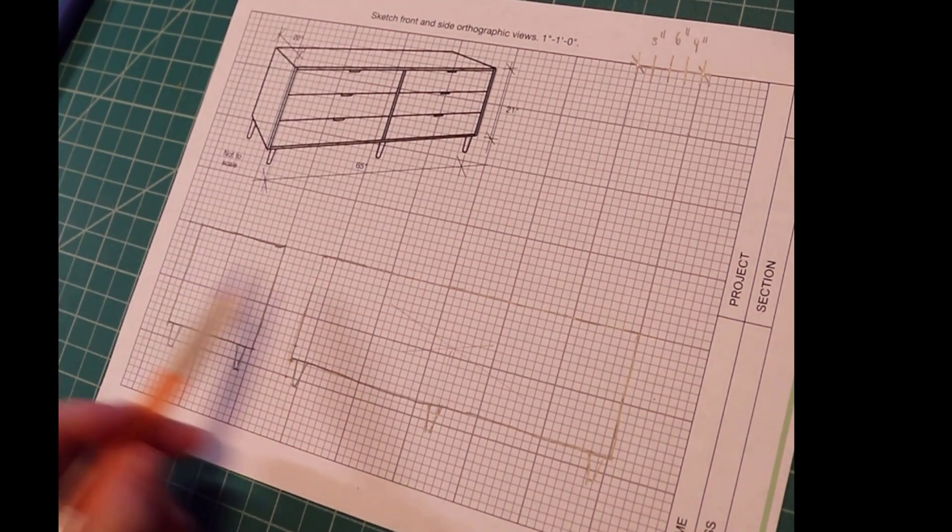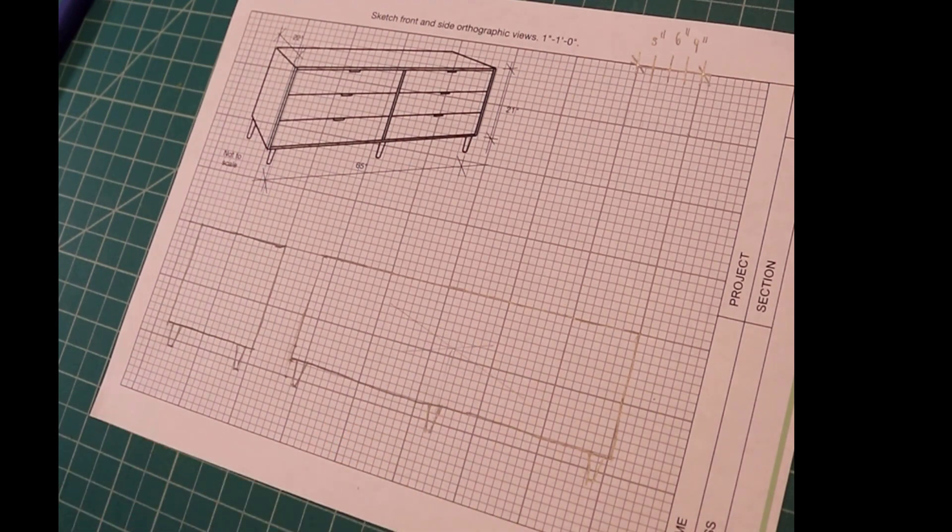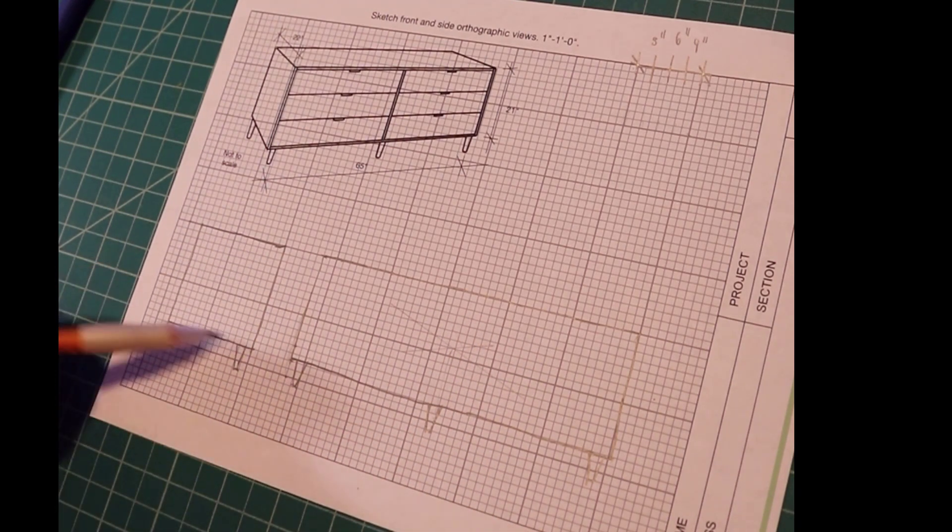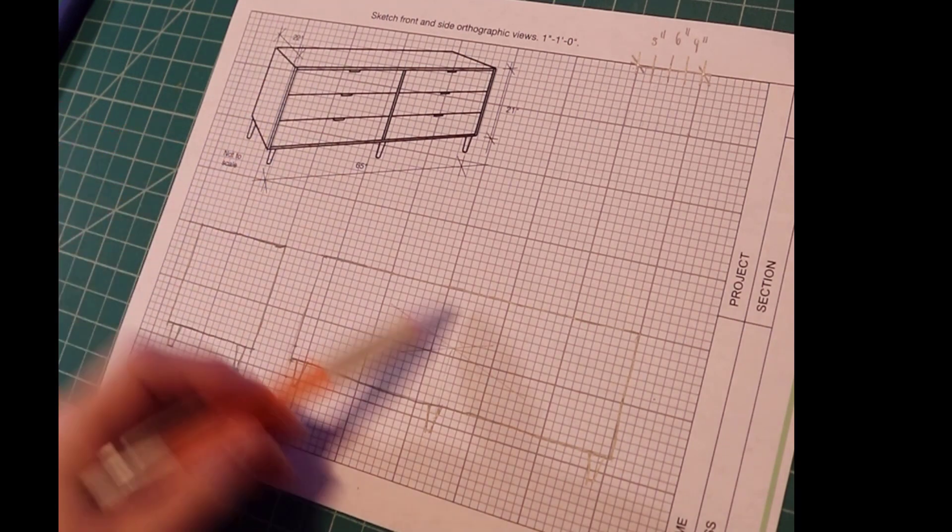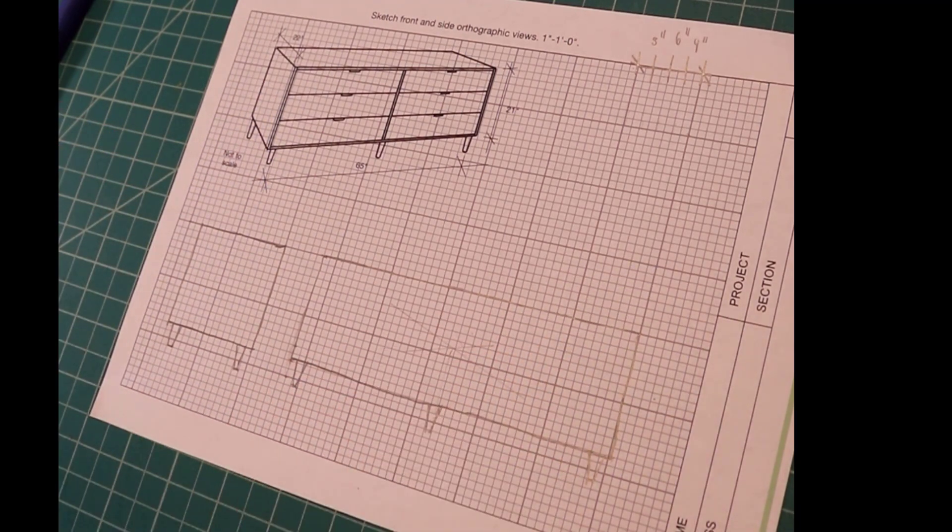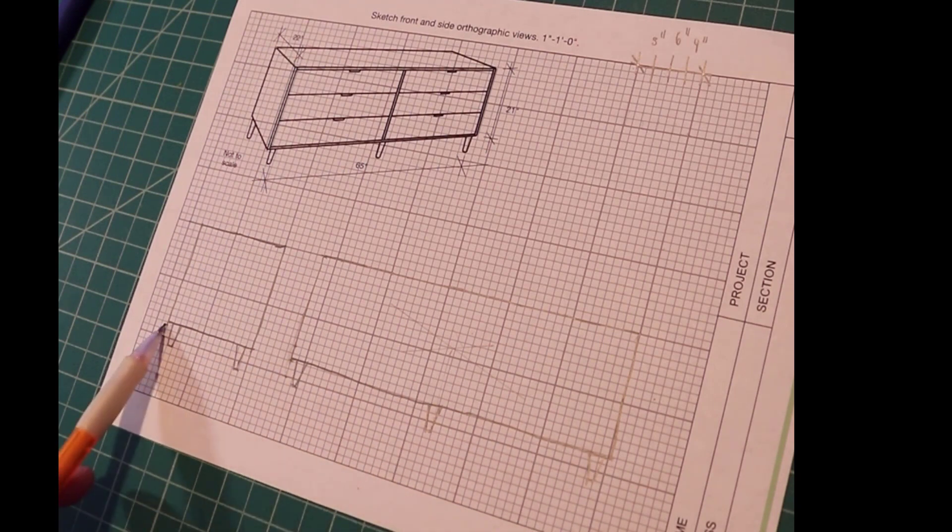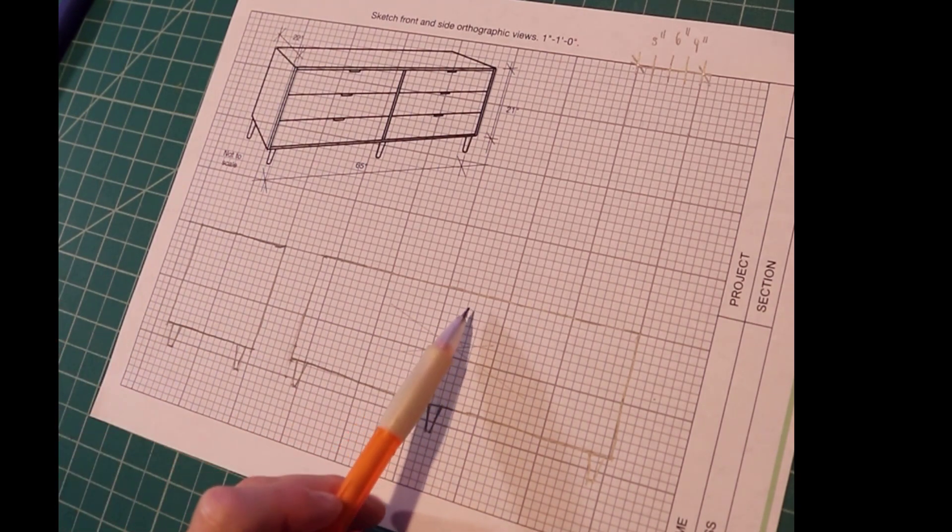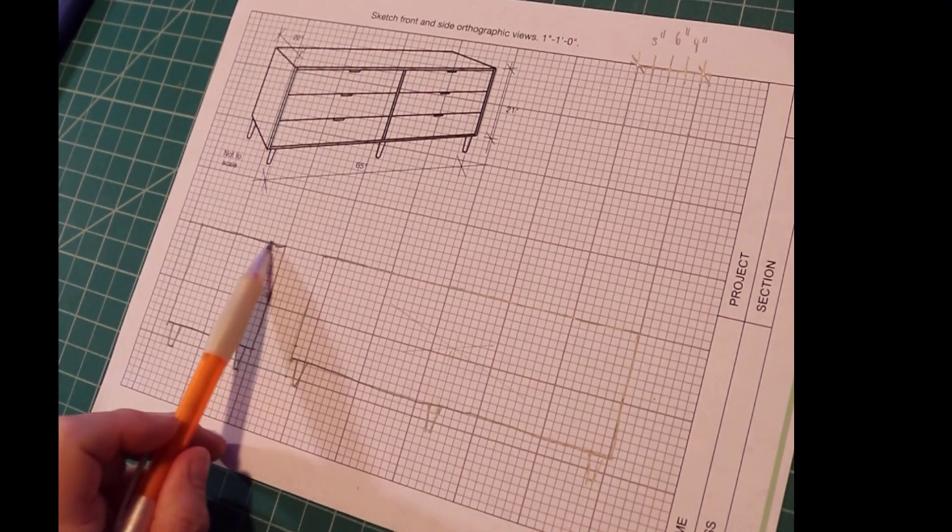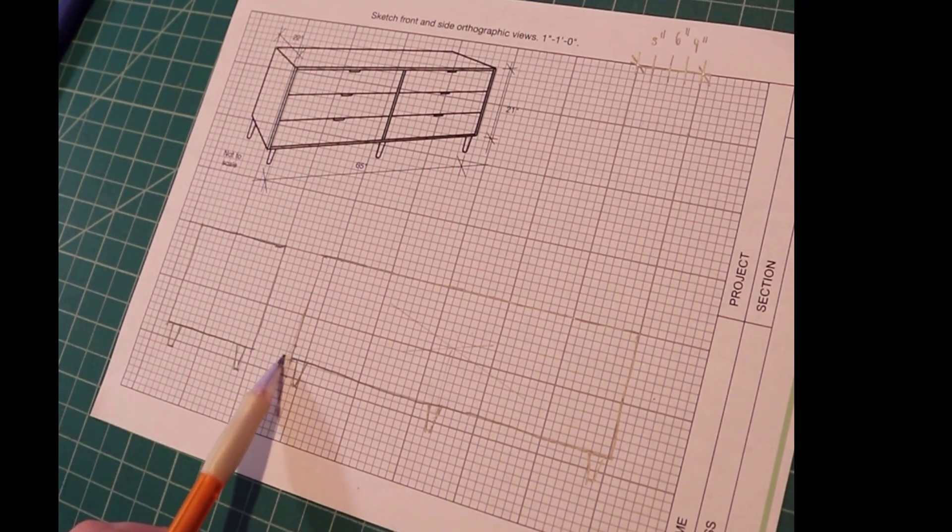Notice that the side and the front views are aligned. You don't want this view up here, you don't want this view over here. You need to align them. That is what orthographic projection is all about—projecting from one view to find a point's location in another view.